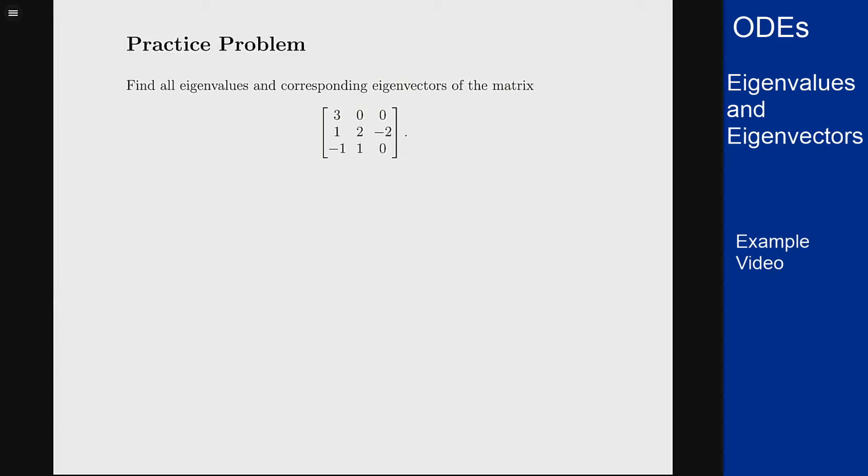We start by finding the characteristic polynomial using the normal determinant formula, which in this case gives you the determinant of a 3 by 3 matrix.